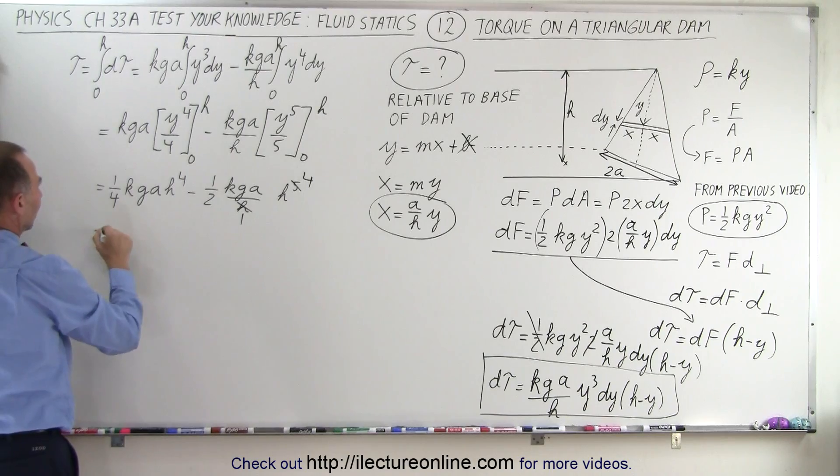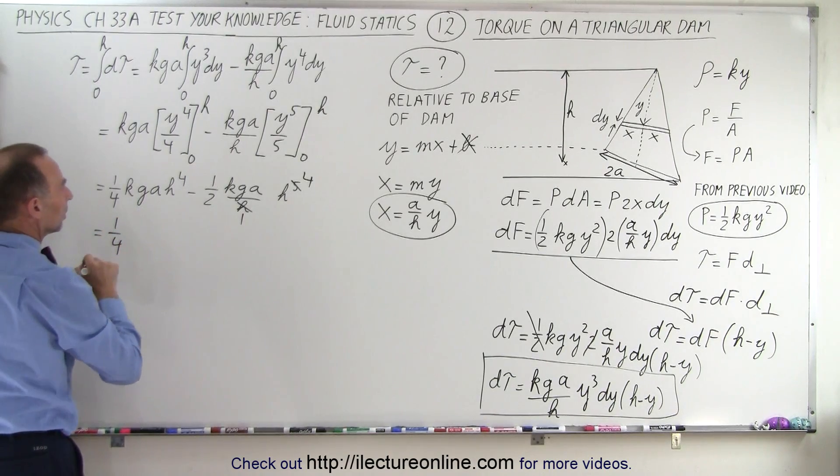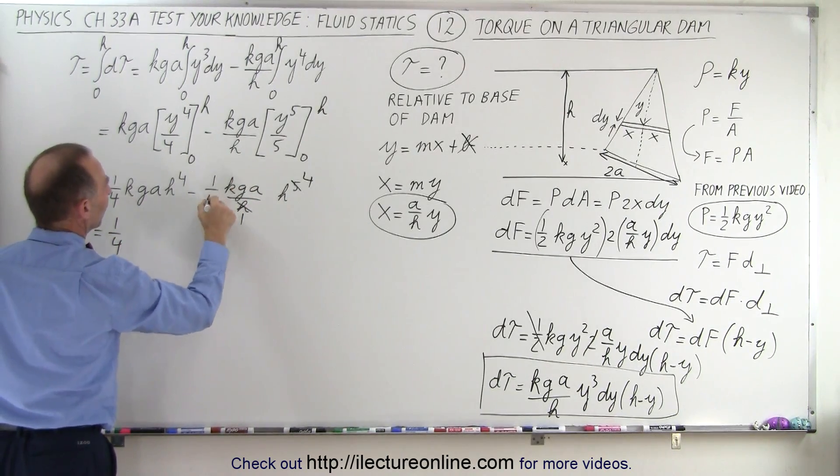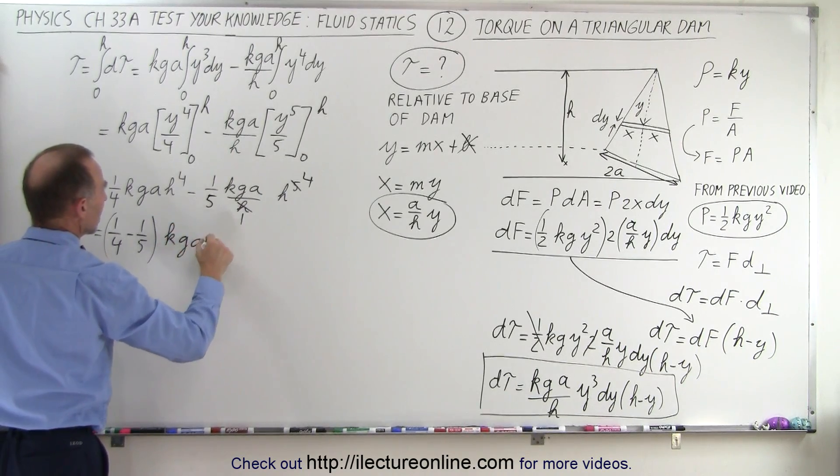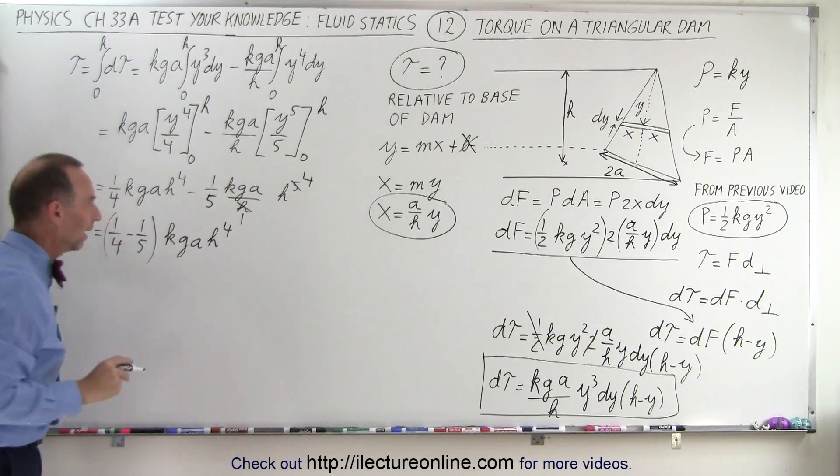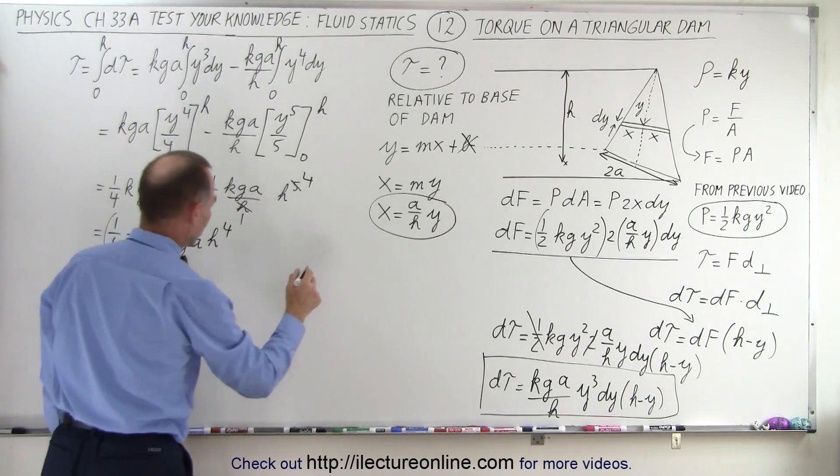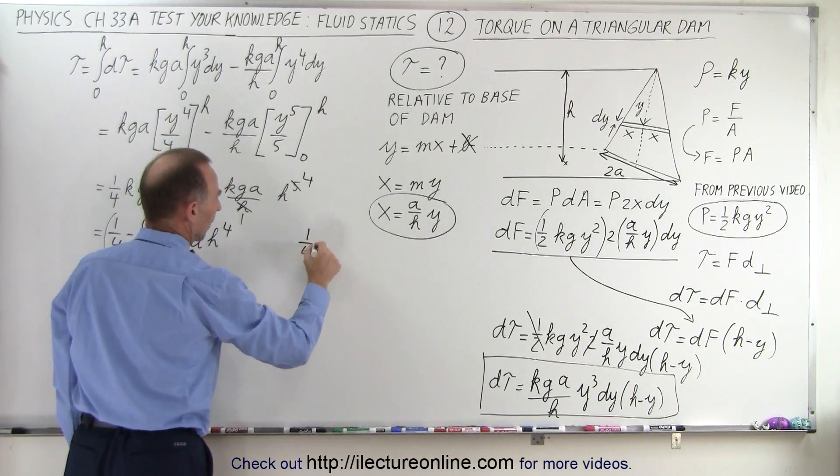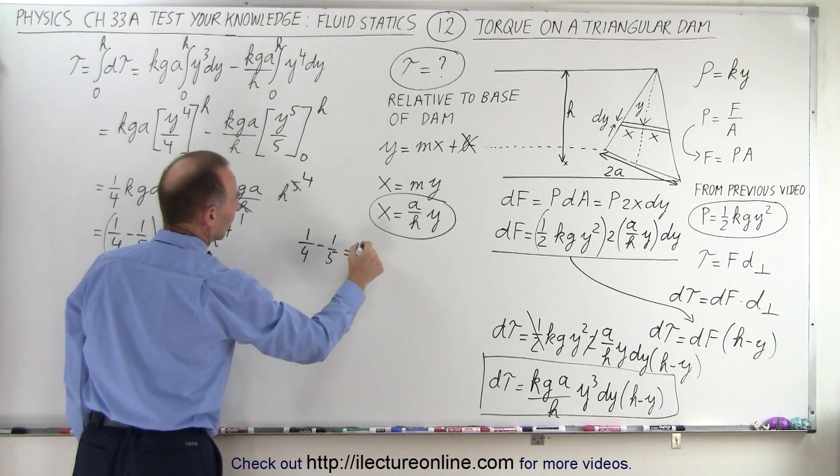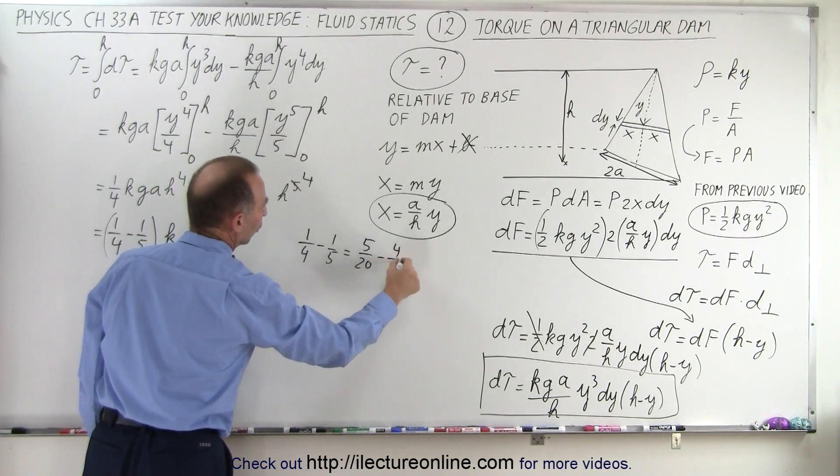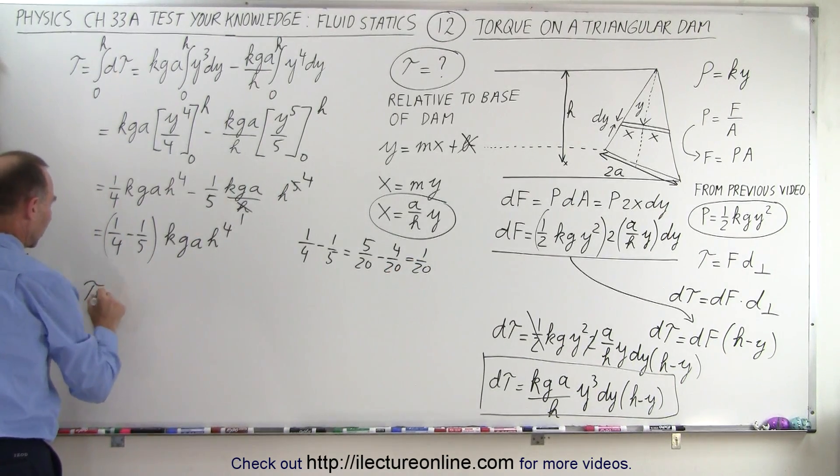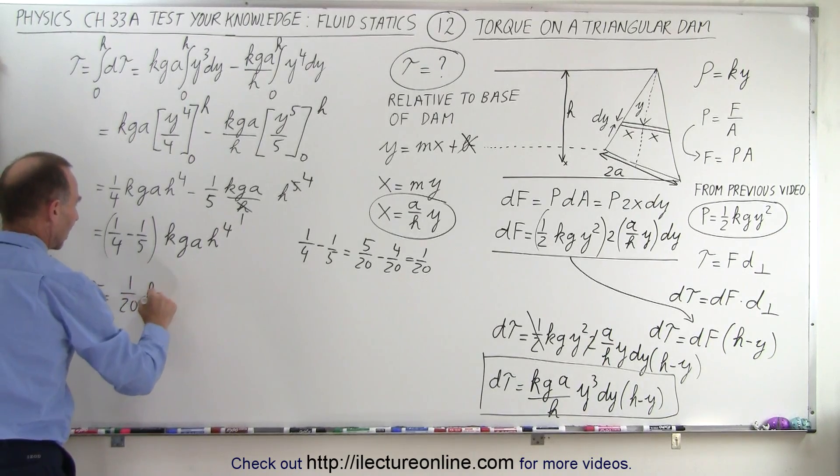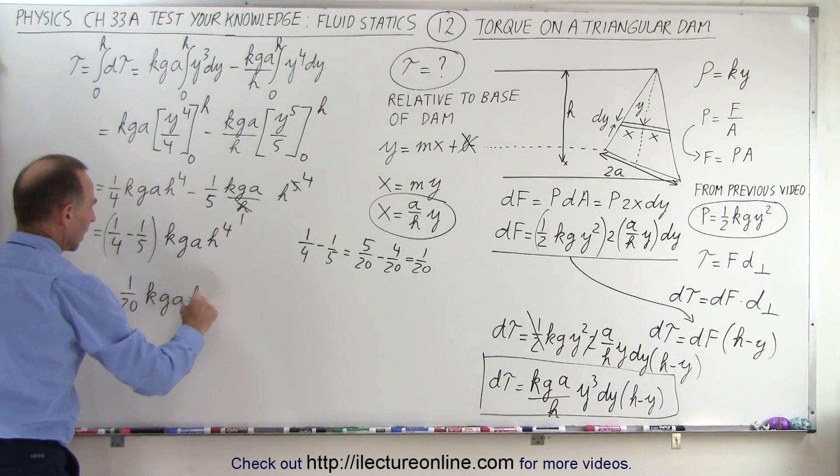So 1 quarter minus 1 5th times Kg A h to the 4th. And finally, 1 quarter minus 1 5th. Notice that the common denominator, so 1 quarter minus 1 5th can be written as 5 over 20 minus 4 over 20, which is 1 over 20. So this can then be written as the torque is equal to 1 20th times Kg A h to the 4th.